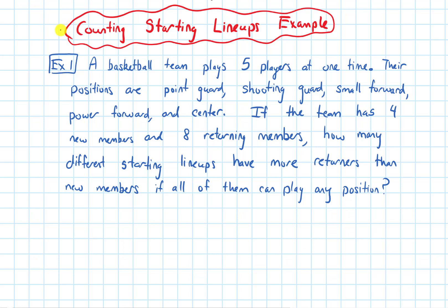In this video we will do an example involving counting the number of starting lineups for a basketball team. A basketball team plays 5 players at one time. Their positions are point guard, shooting guard, small forward, power forward, and center. If the team has 4 new members and 8 returning members, how many different starting lineups have more returners than new members, if all of them can play any position?